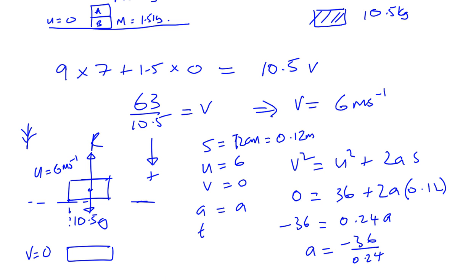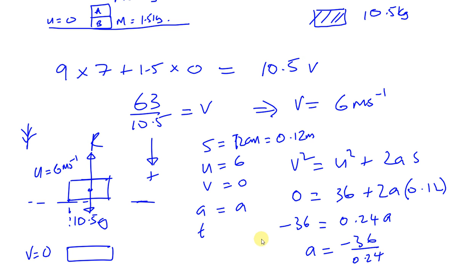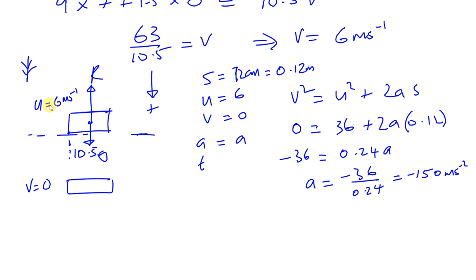So A is going to be minus 36 divided by 0.24. So you're going to have negative 36 divided by 0.24. That gives you negative 150. Negative 150 meters per second squared. Okay, now that's a big acceleration and it's negative. Why? Because it's a deceleration. It's slowing it down to zero. Okay, so negative 150 meters per second acceleration.